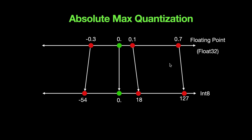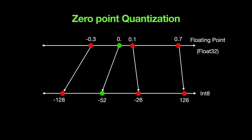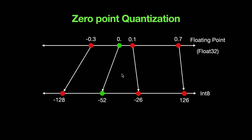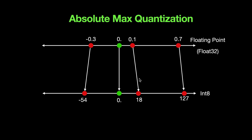To emphasize: for the same values of -0.3, 0, +0.1, and 0.7, in zero point quantization the zero point becomes -52 rather than staying at zero as in absolute max quantization. This is the main difference between the two methods.